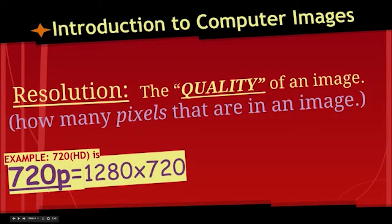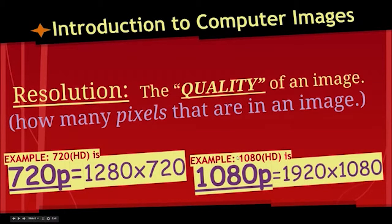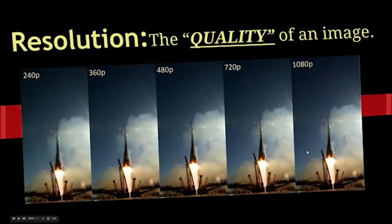An example of medium HD is 720p, which is 1280 pixels by 720 pixels — over a thousand pixels left to right, and about 720 going up and down. When you're looking at an HD 1080p monitor, there's going to be almost 2,000 pixels left to right and over a thousand up and down. When you gain more pixels, you gain higher quality — it looks better and better.